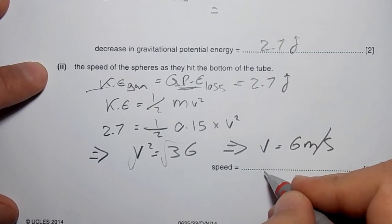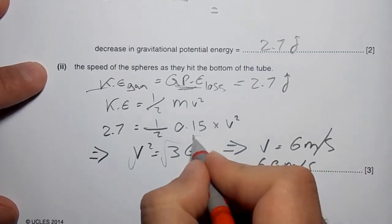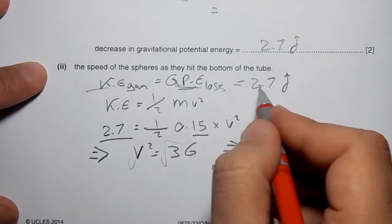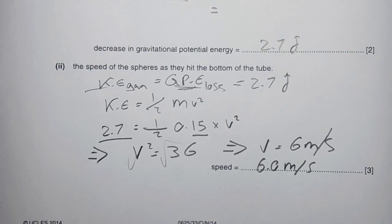If you want proper significant figures, you should write it as 6.0 meters per second, because we have 2 significant figures in our given values, so the answer should have 2 significant figures.